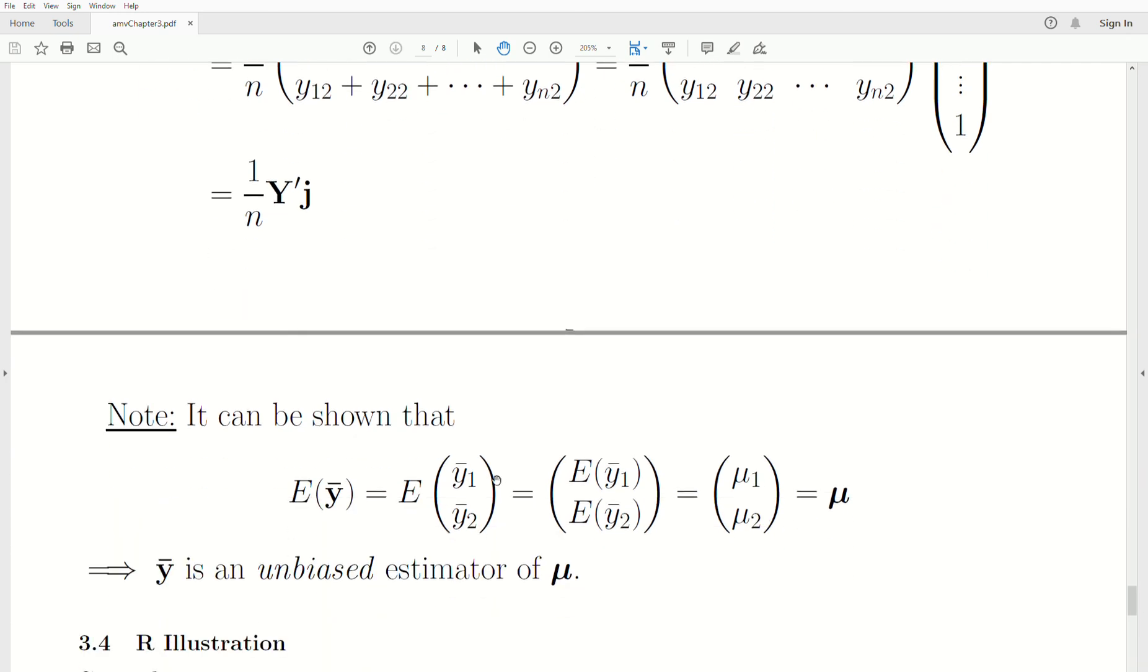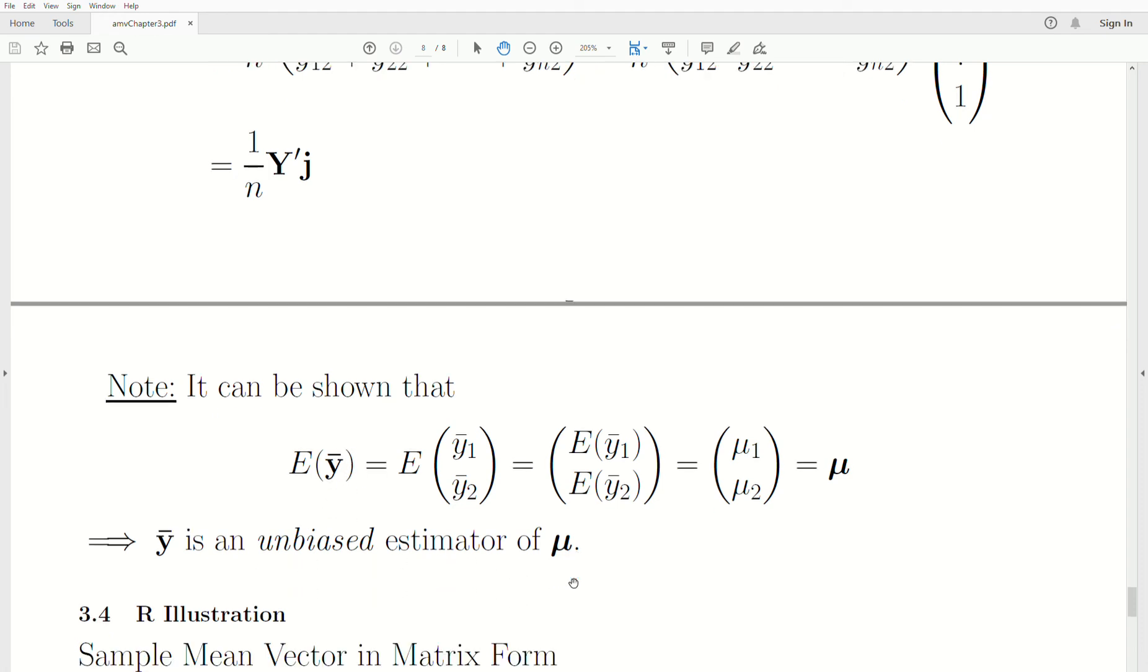An interesting property is that the expected value of the sample mean vector, which is the mean of each component, goes into each component. The expected value of the sample mean of variable one is just the mean of variable one, and the expected value of y2 bar is the mean of the second component, which is just the mean vector. This is saying that the sample mean vector is unbiased for the population mean vector.